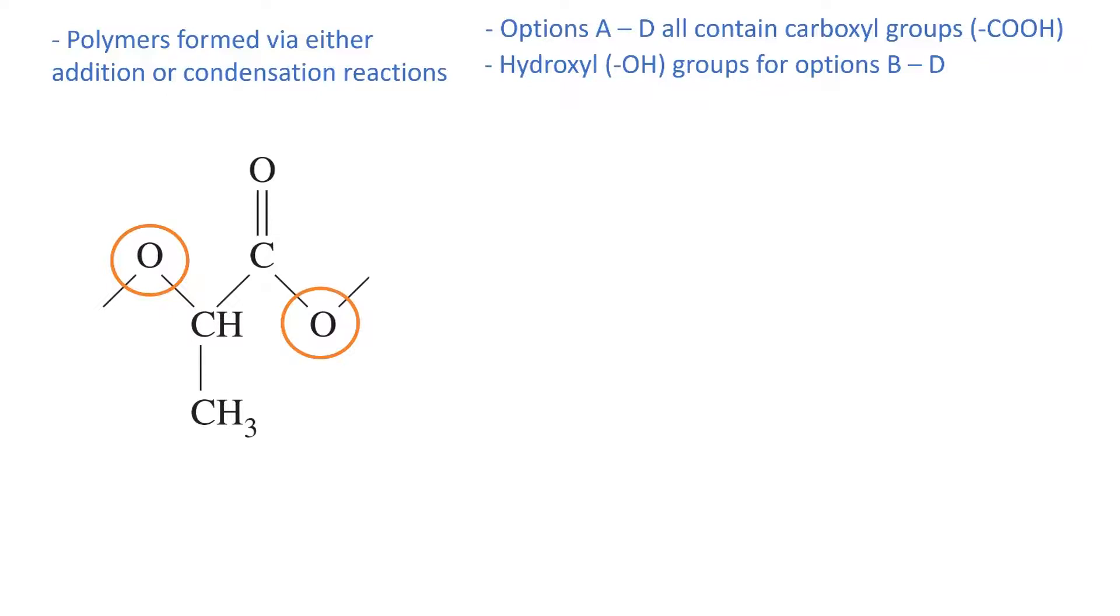Therefore, to determine the monomer, let's add back the hydrogen atoms that were lost. No oxygens are added back, as one of them will be lost to form water. This is what our monomer looks like.